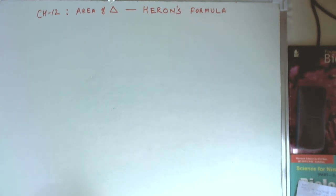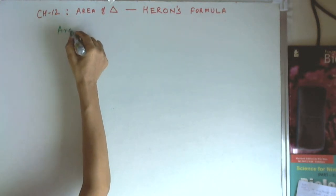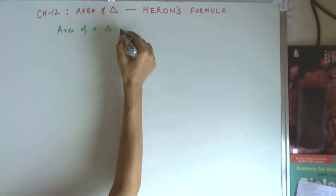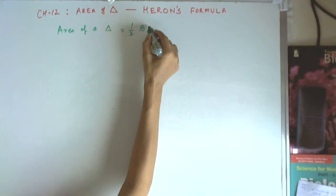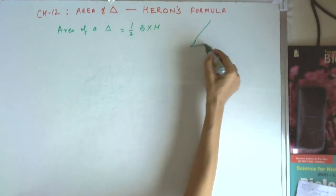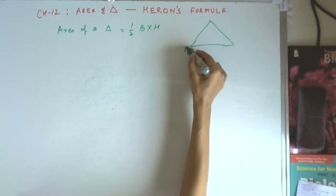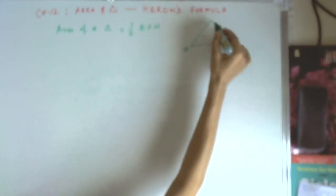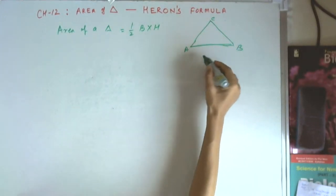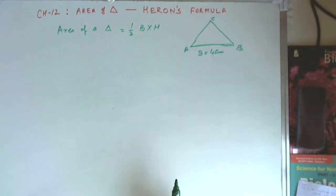Normally, how do we calculate the area of a triangle? The area of a triangle is equal to half base into height. So if we have a triangle ABC, we can easily measure the base — say the base is 4 cm — but how do we measure the height?